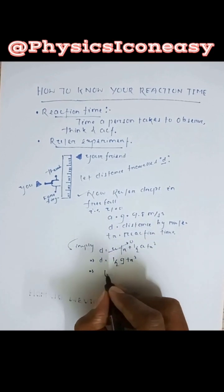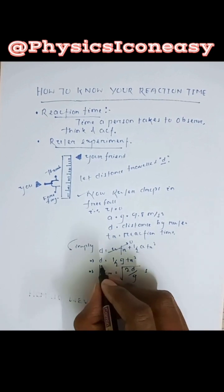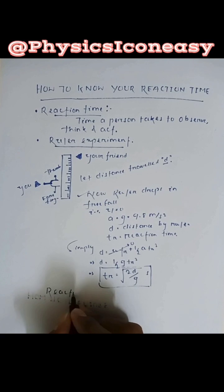Now d is equal to half g t square and therefore reaction time is equal to root of 2d by g where d is equal to distance covered on the ruler.